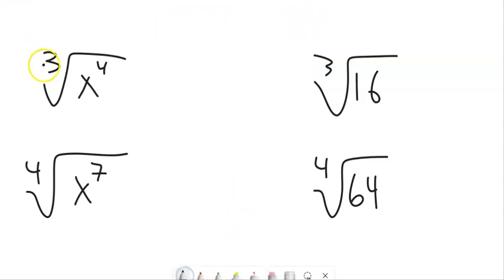For example, with this one with cubed, we want to take out as many cubes as we can. So let's write this as the third root of x cubed times the third root of x. Well, this is just x, right? Undoes itself. So this would be x cube root of x.